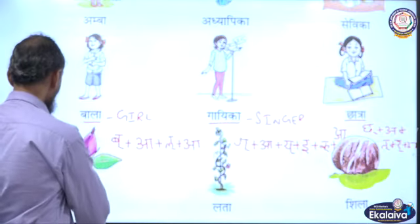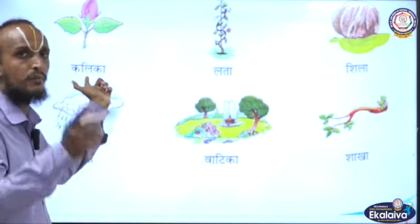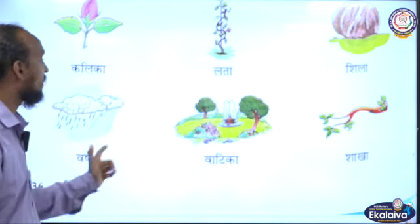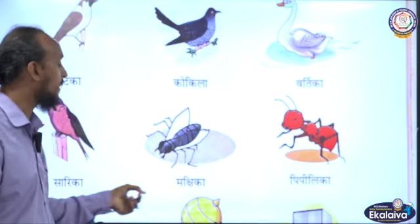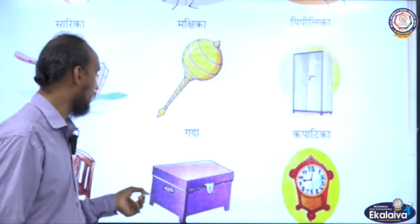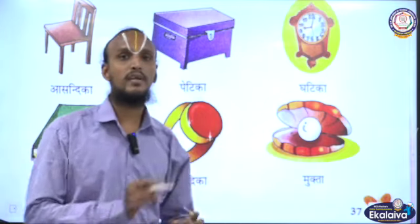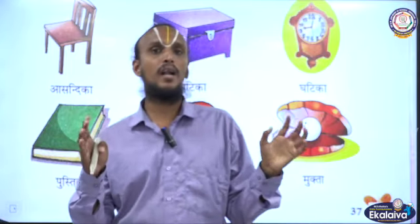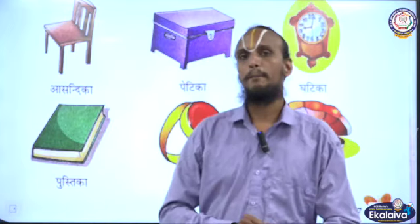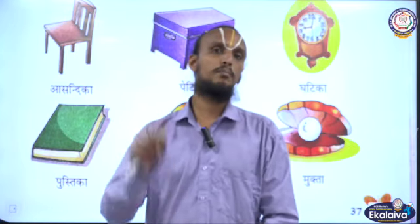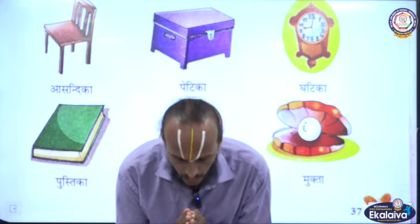Now, children, what you have to do: Write the meanings for these words — Kalika means Bud; you know pretty well. Also Lata, Shila, Varsha, Vatika, Shakha, Chataka, Kokila, Vartika, Sarika, Makshika, Pipilika, Nauka, Gada, Kapatika, Asandhika, Petika, Ghatika, Pustika, Mudrika, Mukta. Write the meanings, split the words, and send a photocopy to me through WhatsApp. Thank you so much, children. Please press the Subscribe button to receive our online lessons. Dhanyavadaha. Shri Gurubhyo Namaha.